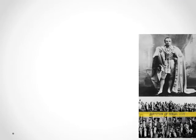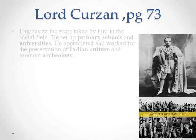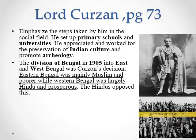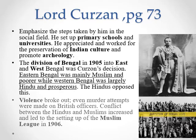On page number 73 you can see the picture of Lord Curzon. He was the Viceroy of India and official representative of the British government. He promoted education, emphasized the social field, set up primary schools and universities, and worked for the preservation of Indian culture and promoted archaeology. In 1905 he decided to divide Bengal into two parts, because Bengal was the largest province of the subcontinent. Eastern Bengal was mainly Muslim and poorer, while Western Bengal was largely Hindu and prosperous. The Hindus opposed this, violence broke out, and even murder attempts were made on British officers. Conflict between Hindus and Muslims increased.